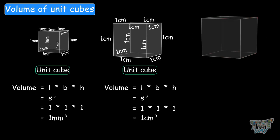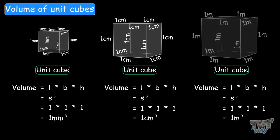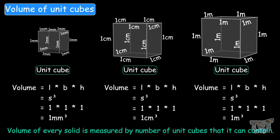Similarly, if a cube has a side of 1 meter, its volume will be 1 meter cubed. So these cubed sides — 1 mm, 1 centimeter, 1 meter — are called unit cubes. These are all unit cubes. And the volume of every solid is measured by the number of unit cubes that it contains.